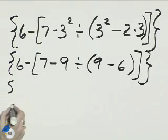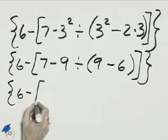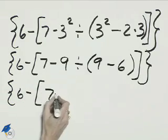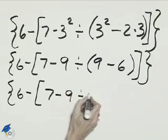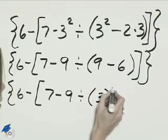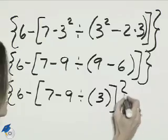And then continue bringing down the 6 minus, 7 minus 9 will come later because we still have parentheses, 9 minus 6 is 3, and close the bracket and the brace.